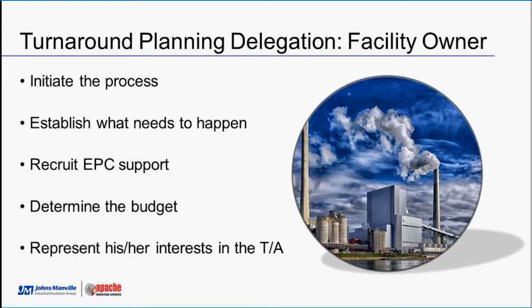You have to have a contingency plan because of historical discoverables. You need to put in contingency money — for example, if you go into the reactor and the bottom head is bad, you may have to replace or repair it, as it's happened at every turnaround in history. The facility owner initiates the process, establishes priorities, and recruits the EPC for support. He determines the budget based on what the EPC returns from all the contractors and always represents his interests throughout.